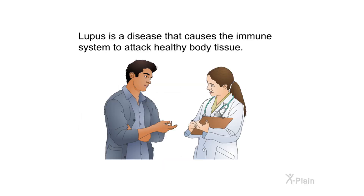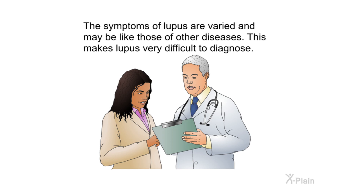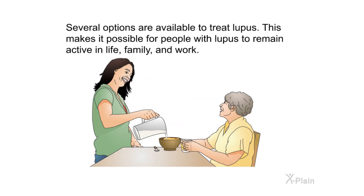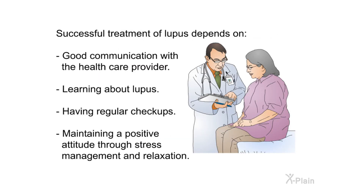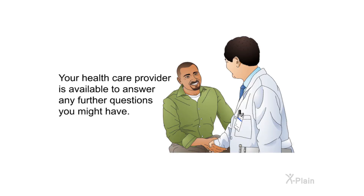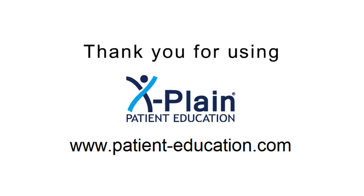Lupus is a disease that causes the immune system to attack healthy body tissue. The symptoms of lupus are varied and may resemble those of other diseases, making lupus very difficult to diagnose. Several treatment options are available, making it possible for people with lupus to remain active in life, family, and work. Successful treatment depends on good communication with the healthcare provider, learning about lupus, having regular checkups, and maintaining a positive attitude through stress management and relaxation.